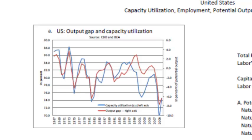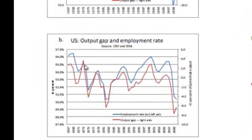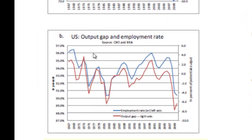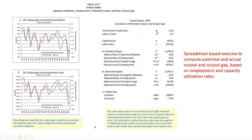We can also see the same relationship for the output gap and the employment rate — when the output gap goes up, the employment rate goes up; when the output gap goes down, the employment rate goes down. There is a spreadsheet-based exercise where you can compute actual output and potential output based on employment and capacity utilization rates.